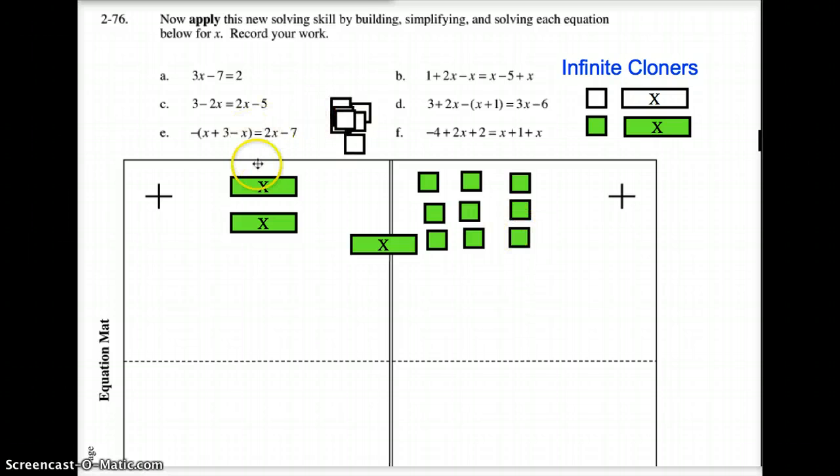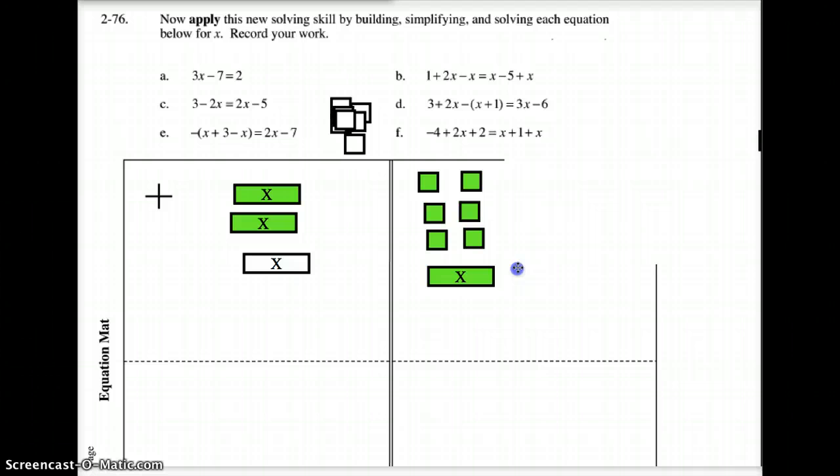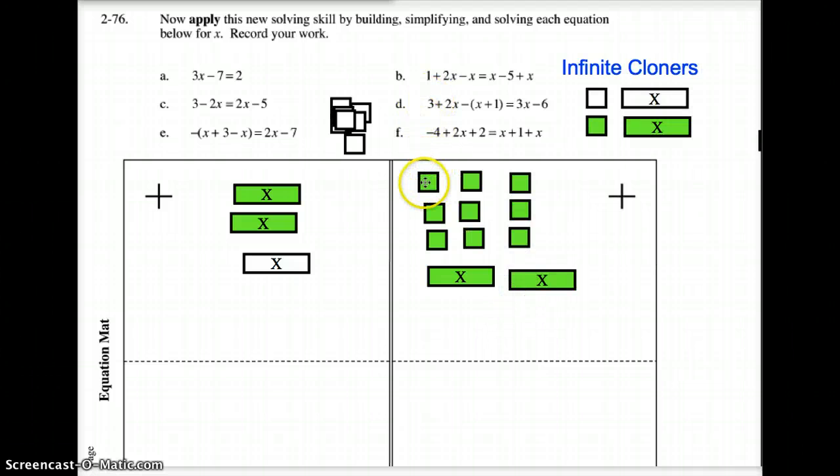I said we'd do one more. All right, so I don't lie to you. Let's do one more. We'll do letter B. Let's see. We've got 2 positive x's on the left side from right here. But we also have a negative x on this side. On this side over here, I've got 1 positive x here. Oh, I've got another positive x here. I've got a positive 1 that goes on the left side. And I've got negative 5. So let's get rid of some of these.